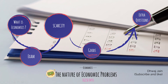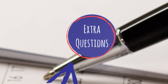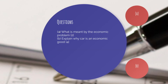I've included some extra practice questions for you. There are two parts, A and B — a two-marker and a four-marker. Part A: what is meant by the economic problem? I want you to write this answer from the video and see if you get full marks.